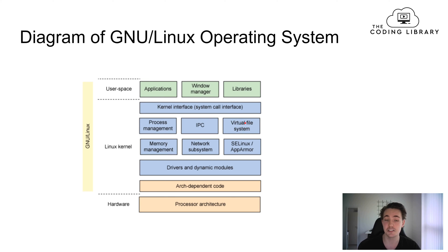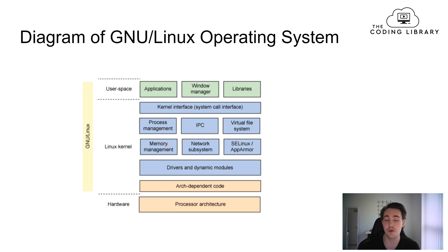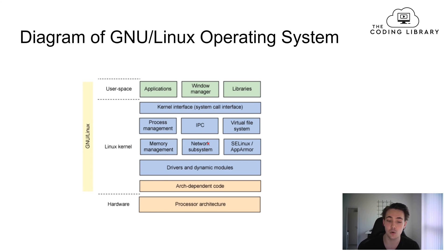We also have a virtual file system representing the actual file system on hardware. Our applications can use the virtual file system and make system calls to it. Then we have memory management — the Linux kernel takes care of memory management for the applications and processes running. We also have network subsystems for networking, and some security in the kernel as well.